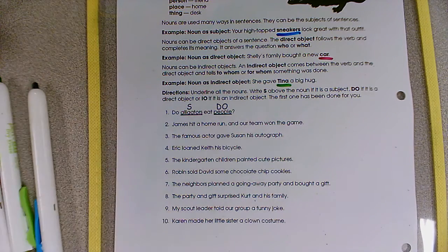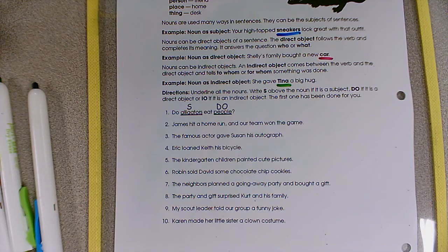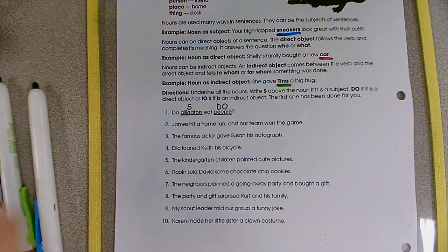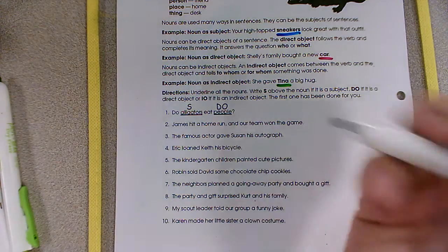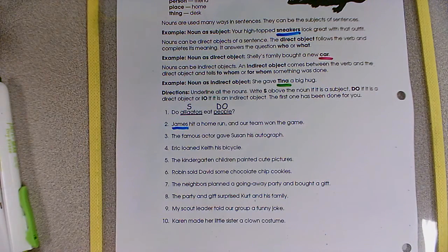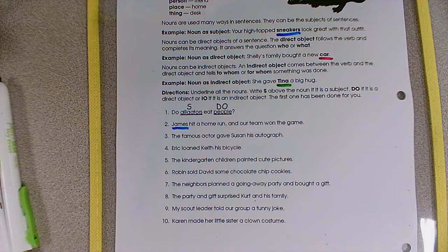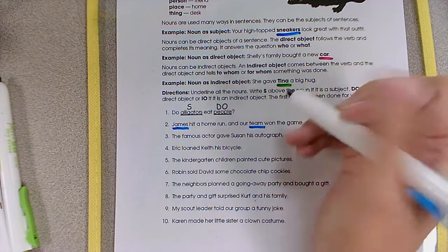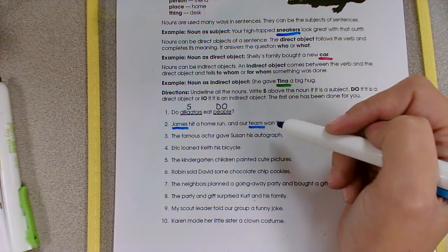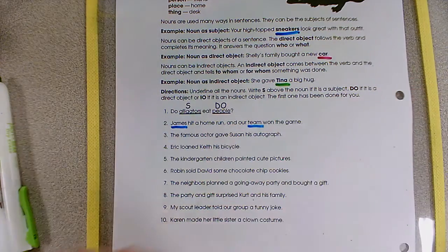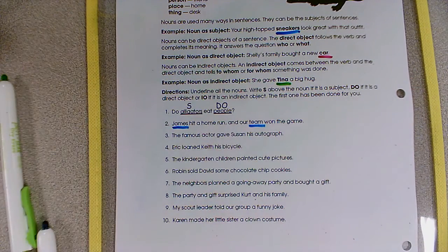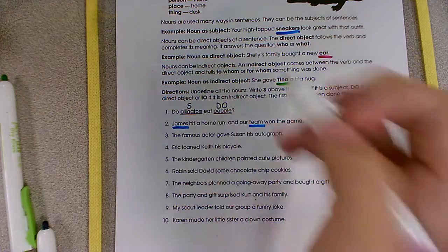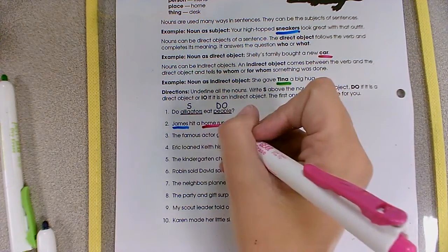So let's look at number two. Number two says, James hit a home run and our team won the game. So this sentence is a compound sentence, so it has two subjects. Our first subject is going to be James. We know that James is our subject because James is the one doing the action, James hit. Our second subject is going to be team. We know this because team is the noun that's doing the action, team won. Next we'll look for direct objects. So we can ask ourselves, James hit what? Home run.